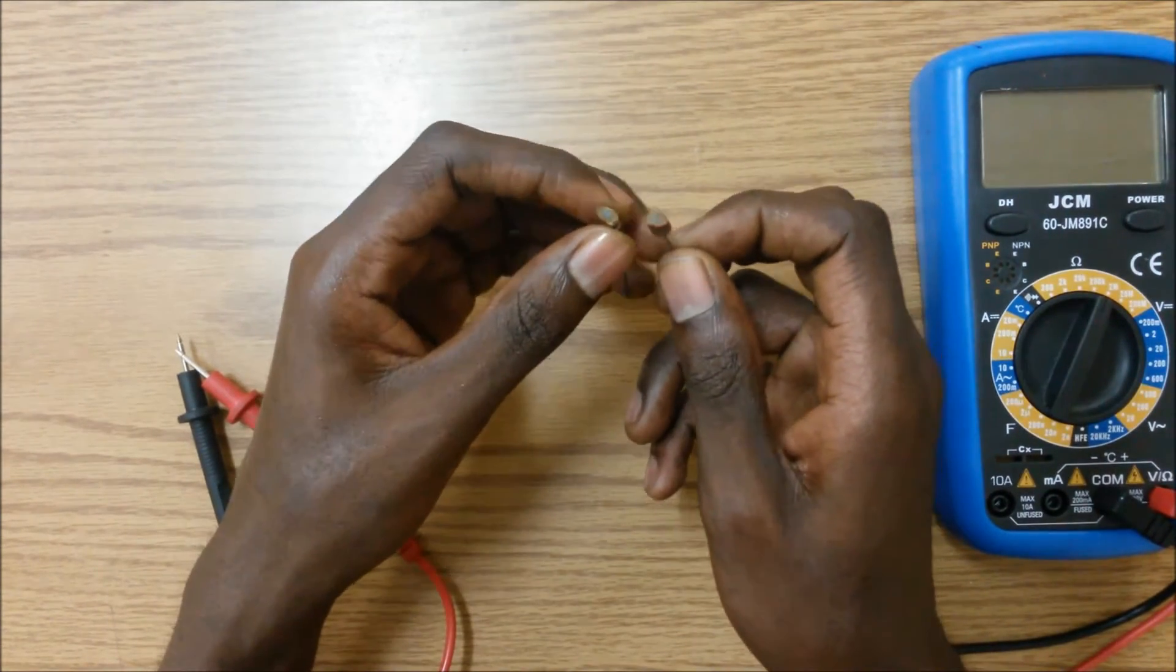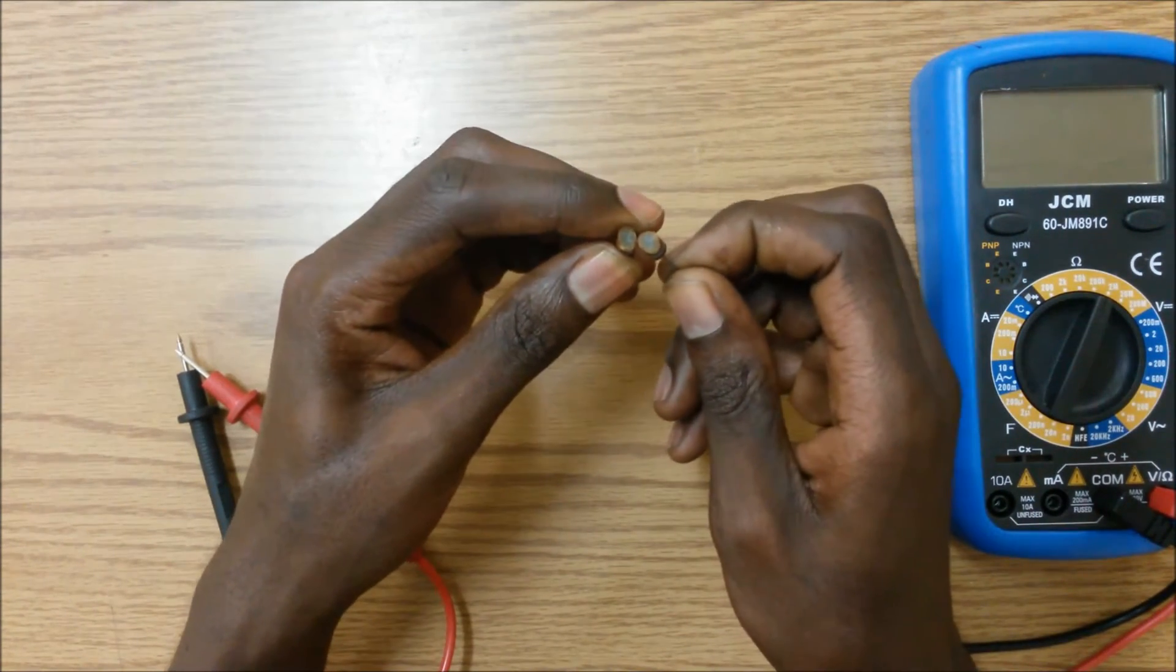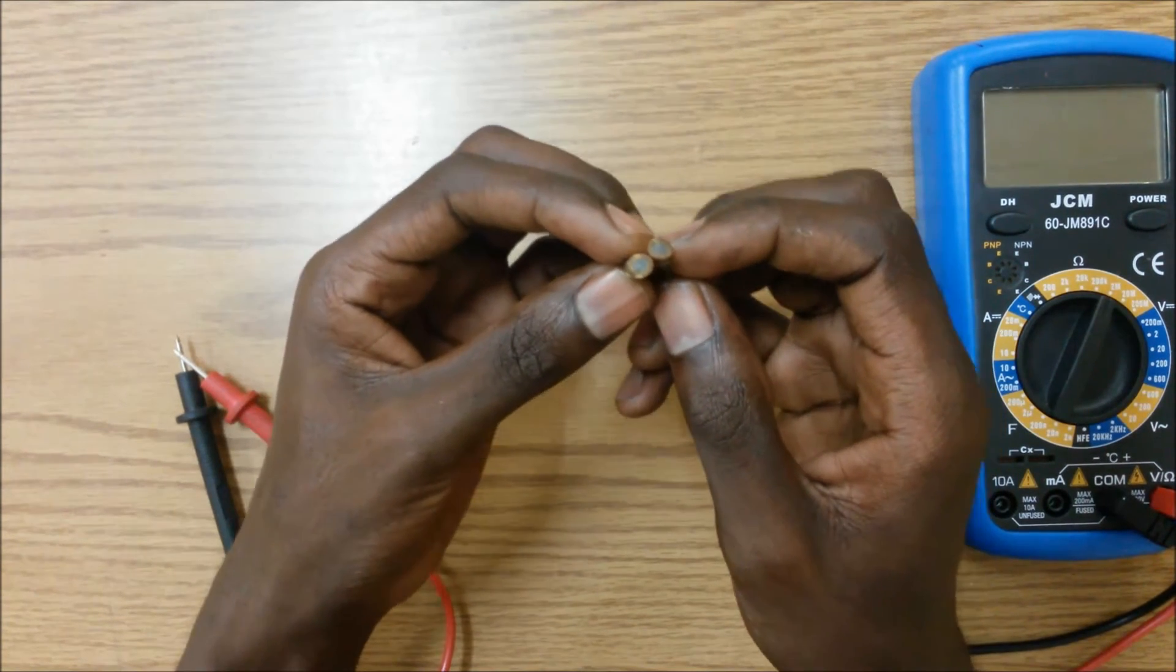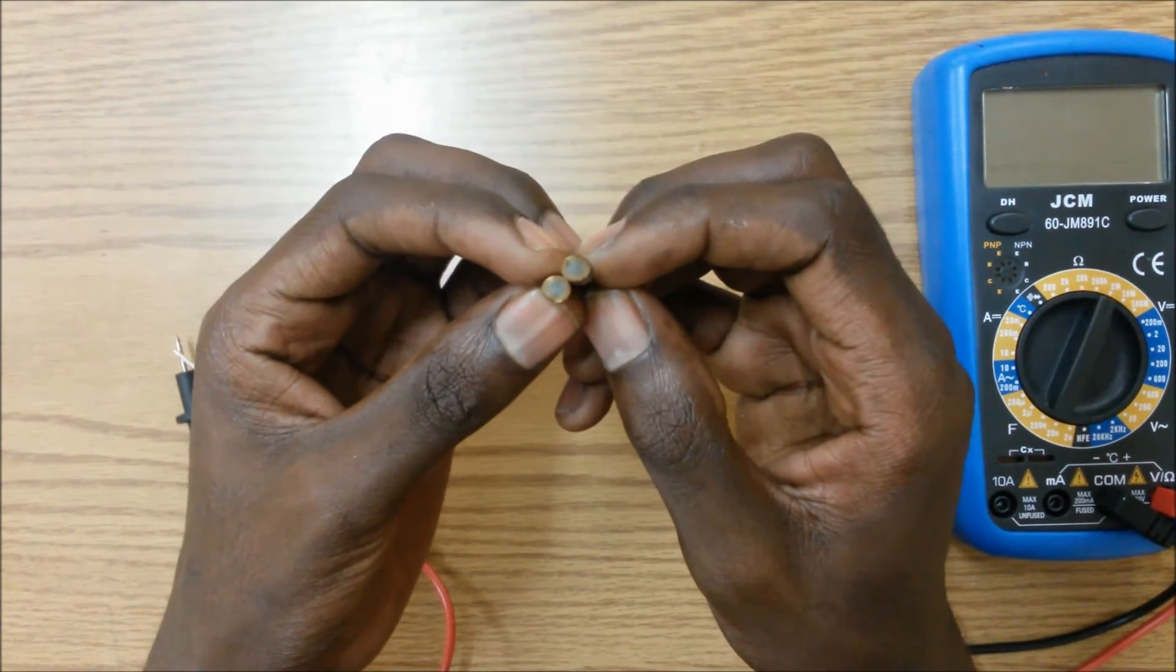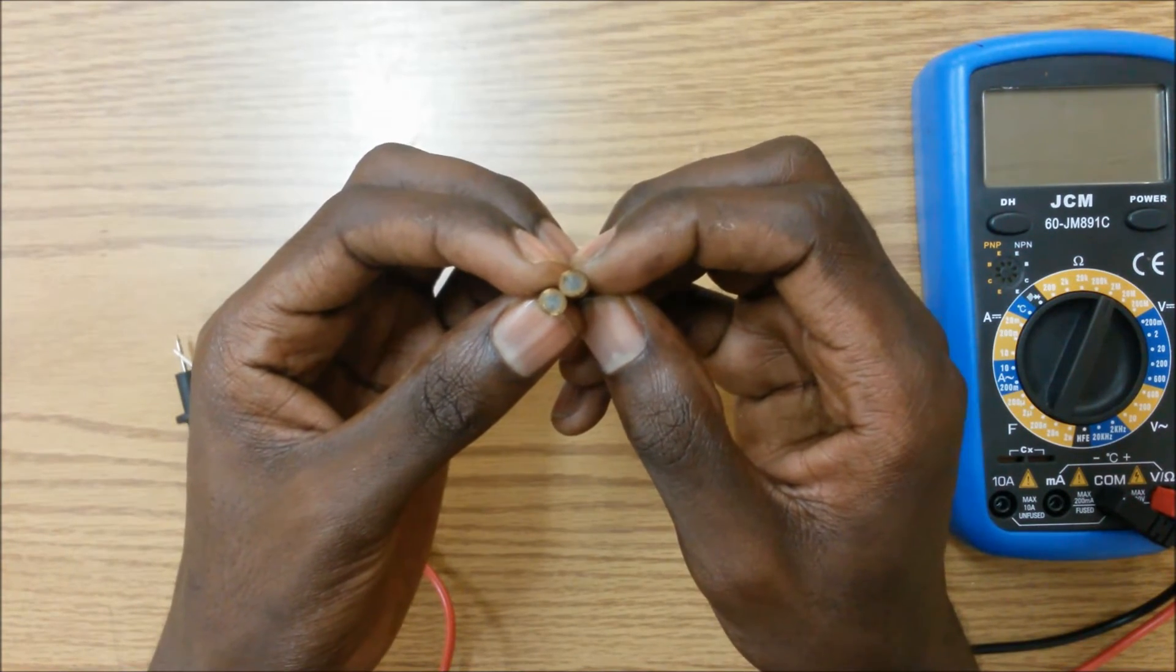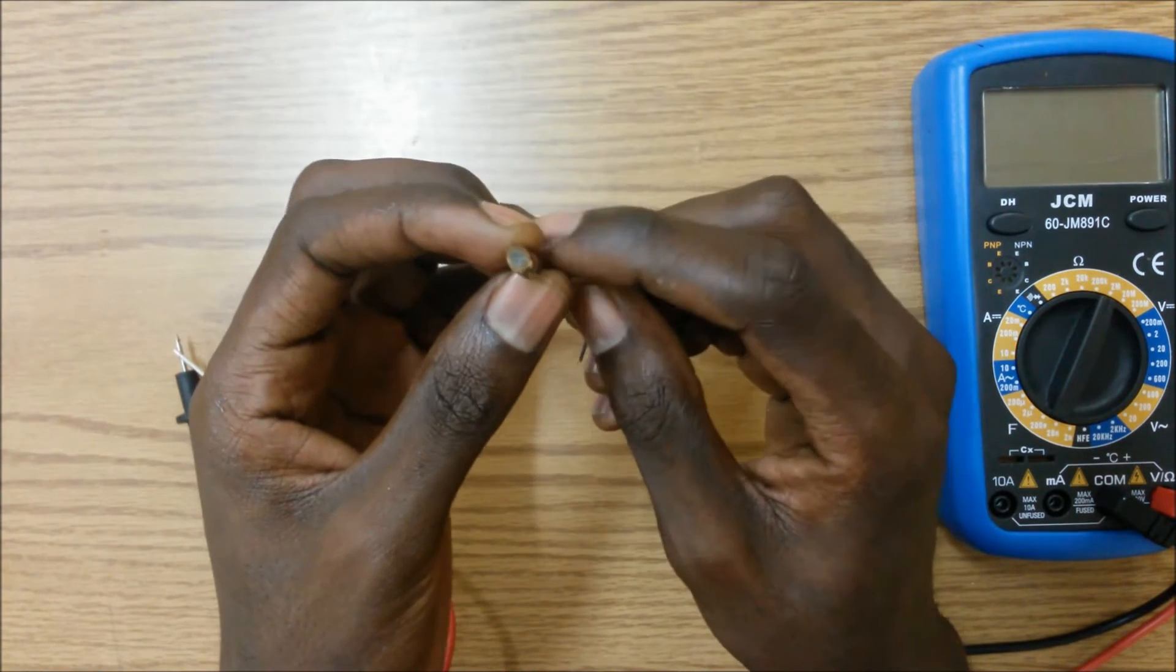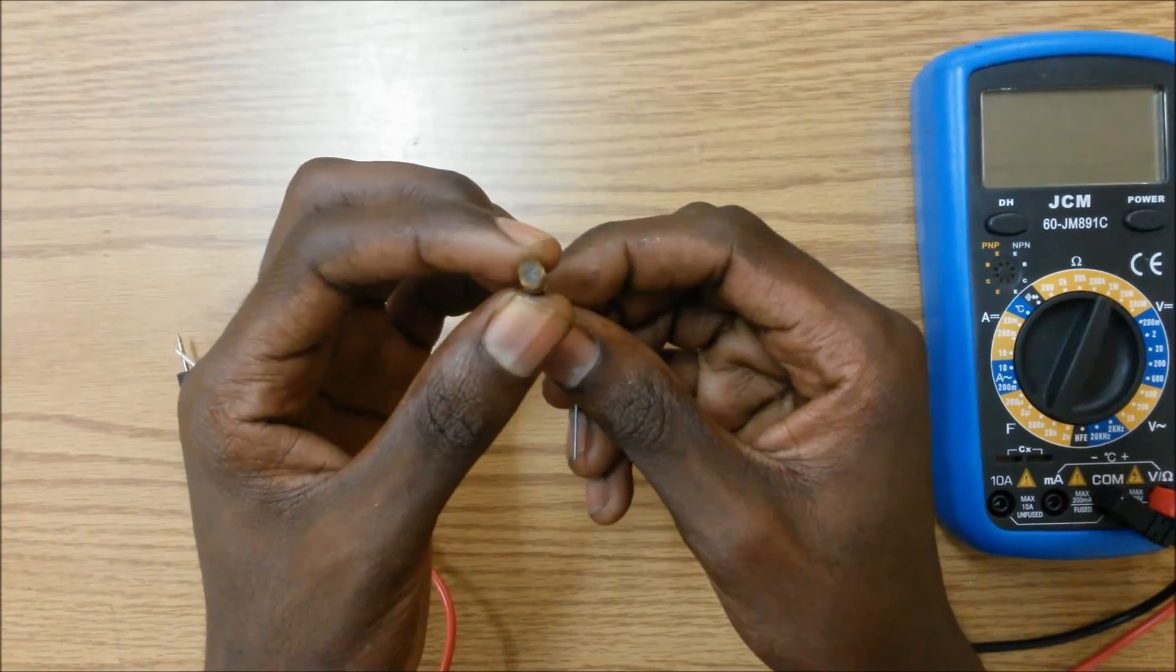So here I have an actual resistor which I actually took apart by breaking it in half. And as you can see there are two different materials which are on the inside of the resistor which is dictated by the two different color patterns.